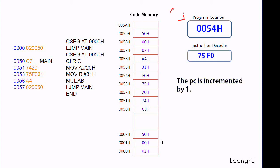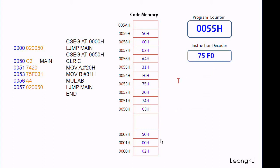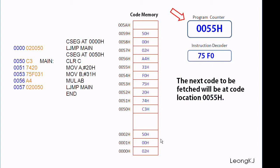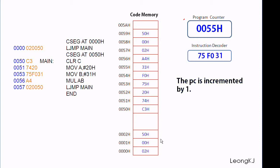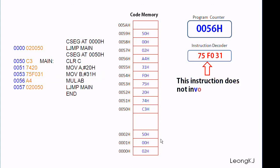The PC is incremented by 1. This instruction is not complete — the processor needs to fetch more code. The next code to be fetched will be at code location 0055. The PC is incremented by 1. This instruction is complete and can be decoded as MOV R1, #31 hex. This instruction does not involve a jump, and the PC remains at 0056.